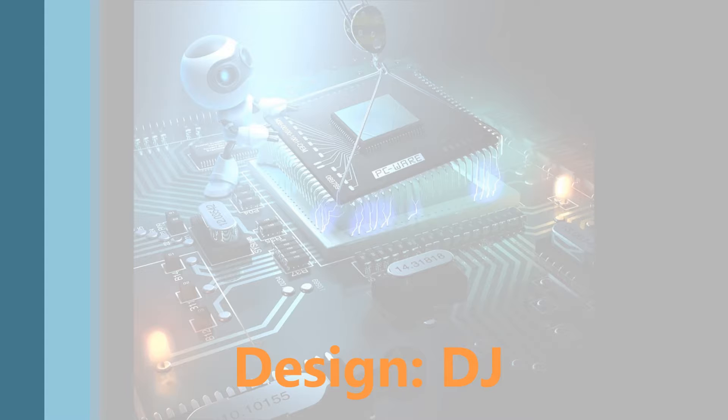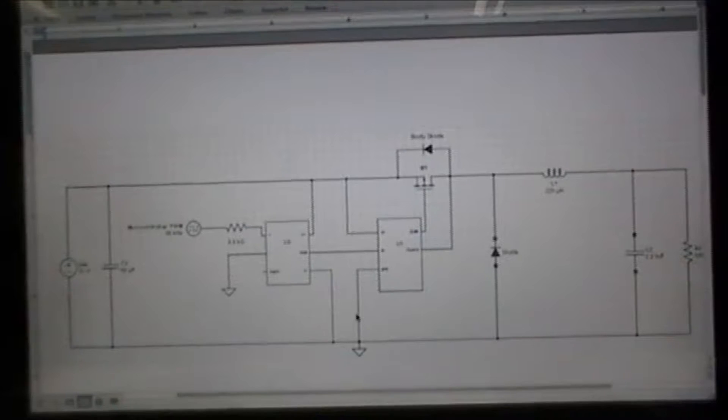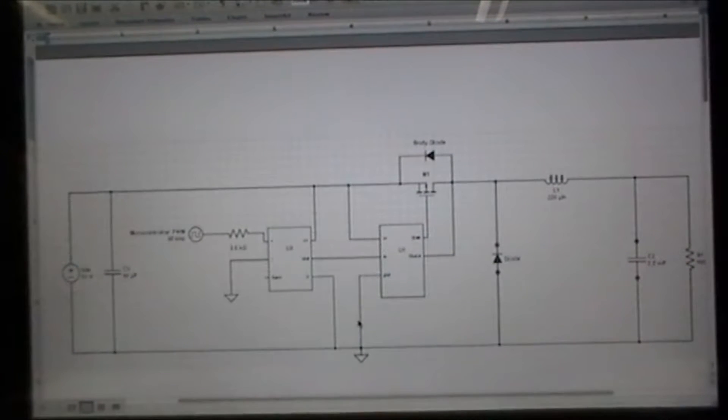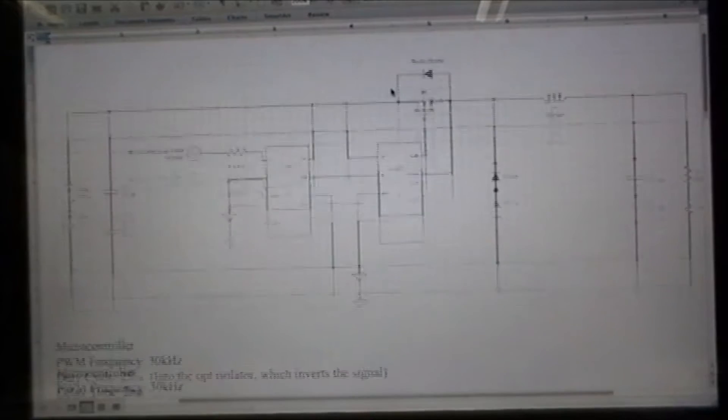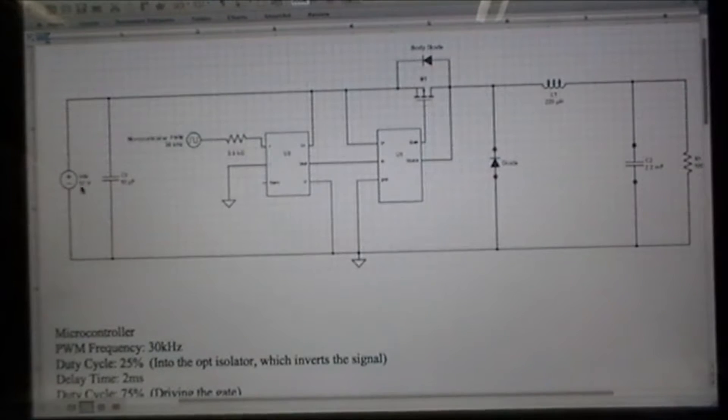For our project, we were to design a buck converter. We were supposed to take 12 volts DC and drop it down to 9 volts across the load.